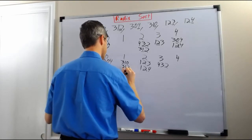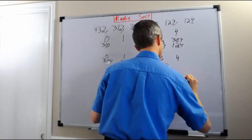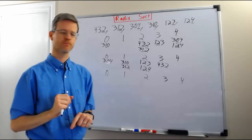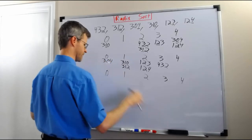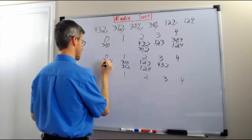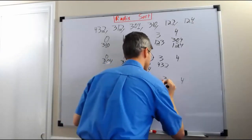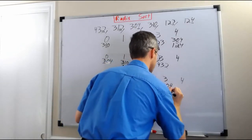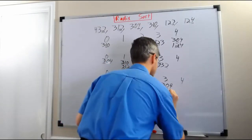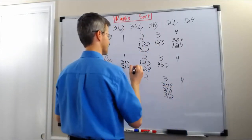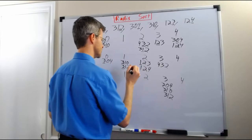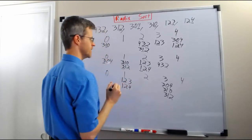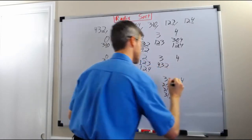We'll do another set of bins, and as we do this we're careful to read things out of the bins from top to bottom so that we maintain the ordering we've already established. 304 has a first digit of 3, so we write it in the 3 bin. 310 has a first digit of 3, so it goes in the 3 bin. 312 has a first digit of 3, so it goes in the 3 bin. 123 has a first digit of 1, so it goes in the 1 bin. 124 has a first digit of 1, so it goes in the 1 bin. 432 has a first digit of 4, so it goes in the 4 bin.